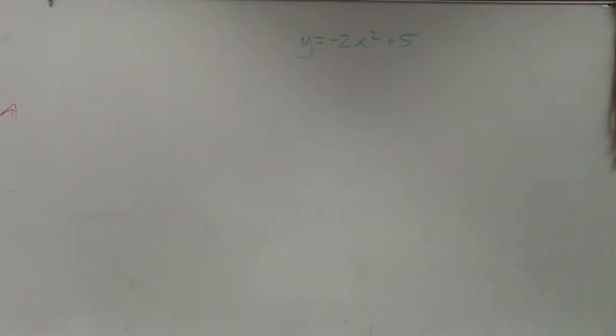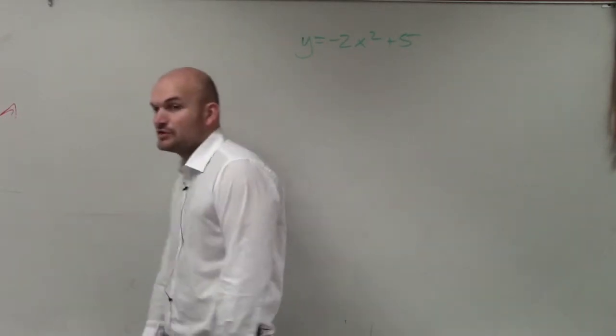So in this example, ladies and gentlemen, what I have is y equals negative 2x squared plus 5. And what I'm going to do is show you how to graph this in our vertex form.